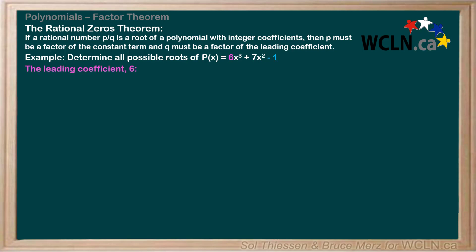The leading coefficient, 6, has factors of 1, 2, 3, and 6 — but don't forget to consider both positive and negative values. The constant term, negative 1, has only one plus or minus pair of factors: plus or minus 1.